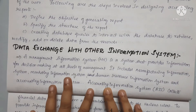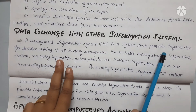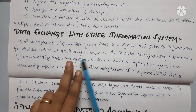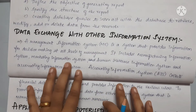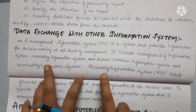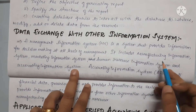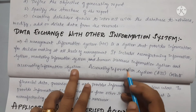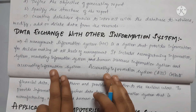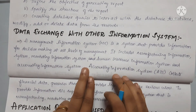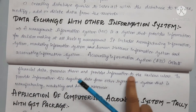Next is data exchange with other information systems. This includes manufacturing information system, marketing information system, and human resources information system — all part of the accounting information system. In a company, it includes manufacturing information, marketing information, and human resources including employee information.